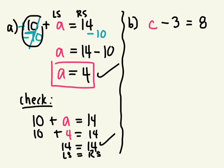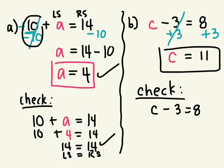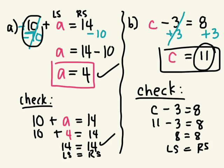We have a number take away 3 is equal to 8. The opposite of subtracting 3 is adding 3. Whatever you do to one side, you must do to the other side. Negative 3 plus 3 is 0, so I'm left with just C — that was my goal, to have C by itself. And 8 plus 3 is 11, so C equals 11. We can check: the original question said a number take away 3 is equal to 8. Is 11 take away 3 equal to 8? Yes. 8 equals 8 — left side equals right side. This is correct.